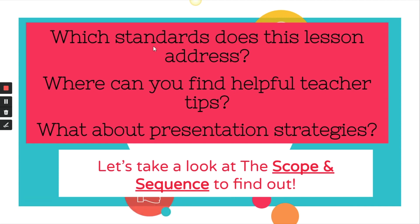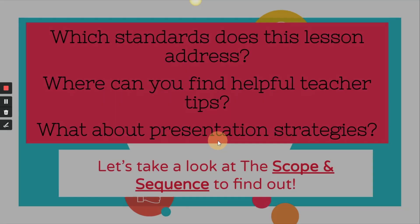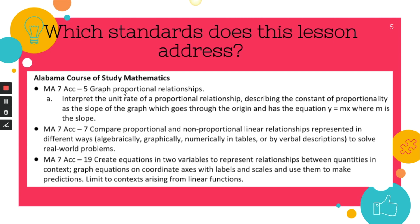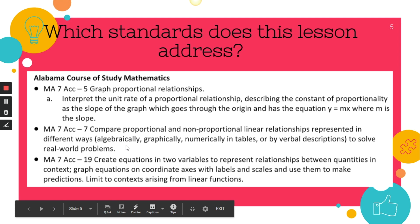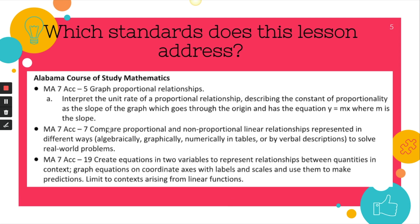If you want to know about your standards, helpful teacher tips, and presentation strategies, you can look at the scope and sequence and find all that information. For this course, students will graph proportional relationships and compare proportional and non-proportional linear relationships represented in different ways. This lesson does a great job representing all four ways of looking at an equation or real-world situation, and creating equations to represent those relationships. These are standards 5, 7, and 19.